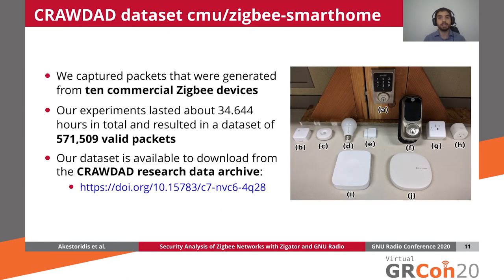For our experiments, we used 10 commercial Zigbee devices to study the traffic they generated. In particular, we conducted 8 experiments where we varied the Samsung SmartThings Hub used for each experiment, as well as the topology of the devices. From these experiments, we generated a dataset containing over 500,000 valid packets, lasting a little over 34 hours in total. This dataset is publicly available to download from the Crawdad data archive.